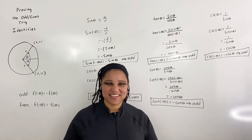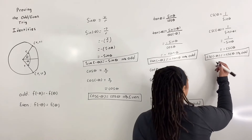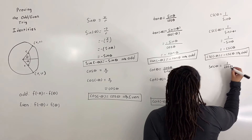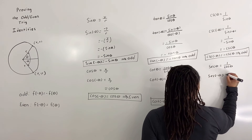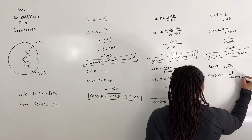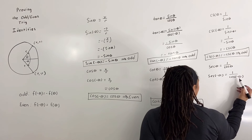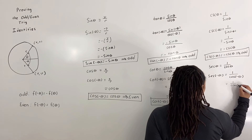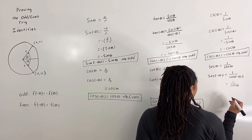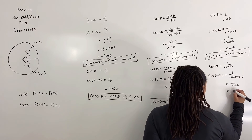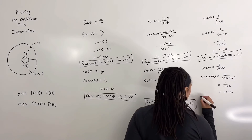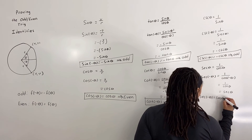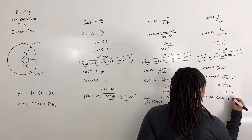Last, we prove that secant is an even function. We know by the reciprocal identity that secant of theta is equal to 1 over cosine of theta. So secant of negative theta is equal to 1 over cosine of negative theta. And since cosine is an even function, we can disregard the negative sign, so we have 1 over cosine of theta. But 1 over cosine of theta is equal to secant of theta by the reciprocal identity. So secant of negative theta is equal to secant of theta, which means that secant is an even function.